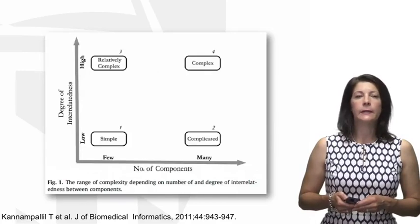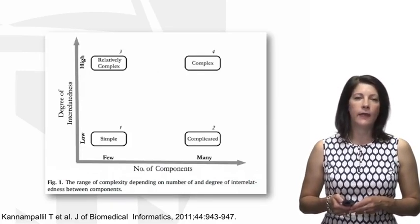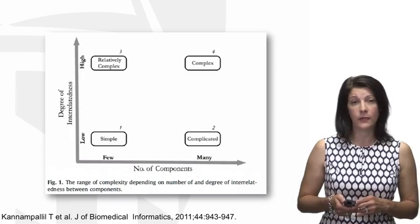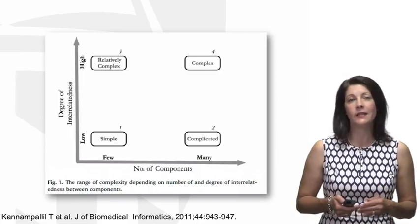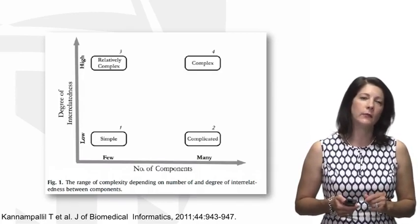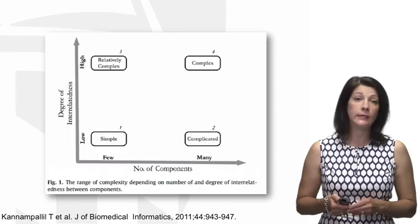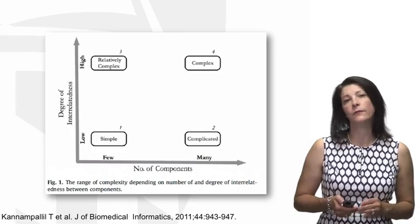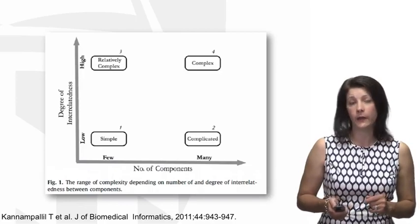This diagram provided by Ken and Palil demonstrates that complexity increases as the number of components of a system increases and the degree of interconnectedness among the components increases. The health care system, with a very large number of interacting components and an extremely high degree of interrelatedness among those components, would fall very high in the fourth quadrant — with an extremely high level of complexity.